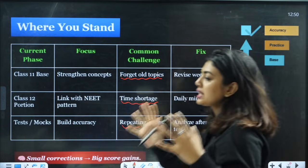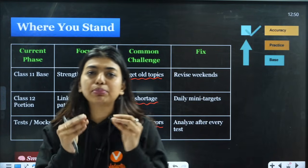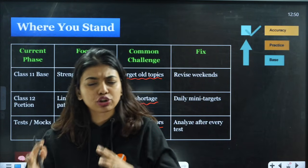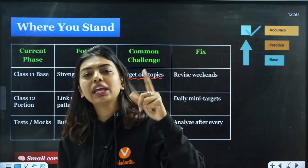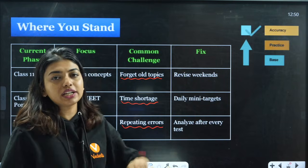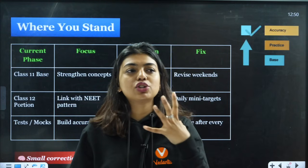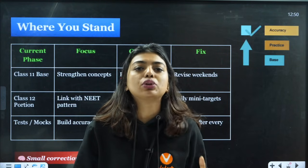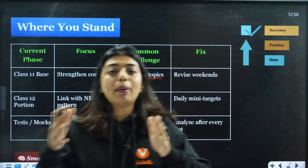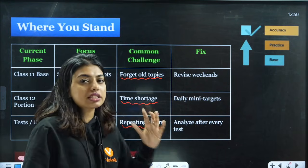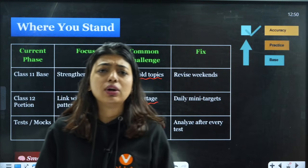The biggest confusion comes when you're in class 11. The main problem students face, whether you're a dropper or class 12 student, is that you forget whatever you studied in class 11. When you come to 12th, there's not enough time for you to complete the syllabus, and when you do practice tests, all the mistakes start repeating.